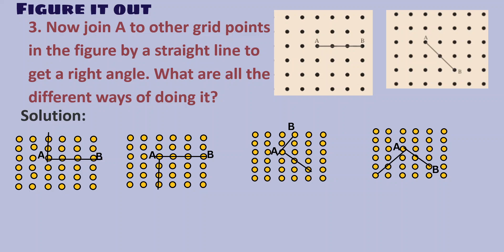Question 3: Join A to other grid points by a straight line to get a right angle. What are the different ways of doing it? In the first picture, A and B are given. We draw one more perpendicular line AC, making 90 degrees. Similarly drawing downward also gives 90 degrees. For the second picture with A and B, we draw a perpendicular giving 90 degrees, and a fourth configuration also produces 90 degrees.